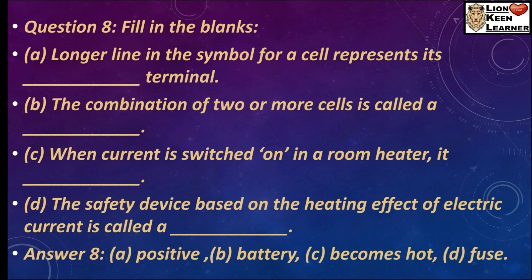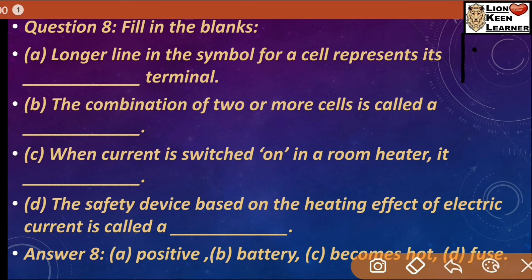Question number 8, fill in the blanks. (a) The longer line in the symbol for a cell represents its positive terminal. Cell के अंदर जो longer line होती है, वो positive terminal है. (b) The combination of two or more cells is called battery. (c) When current is switched on in a room heater, it becomes hot — heating effect. (d) The safety device based on the heating effect of electric current is called a fuse. यह हर घर में पाया जाता है.